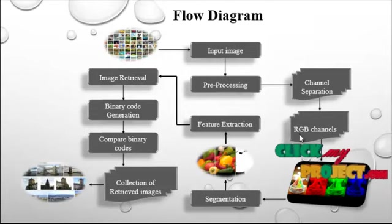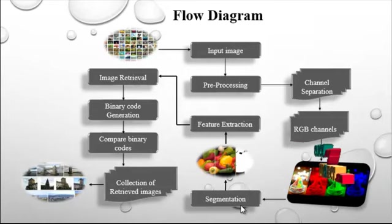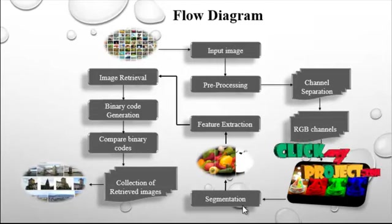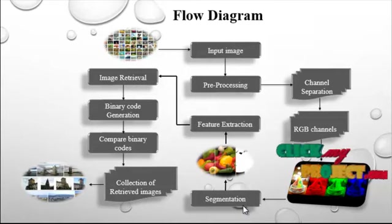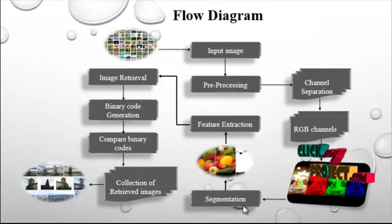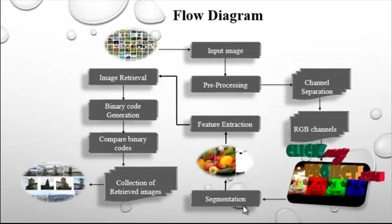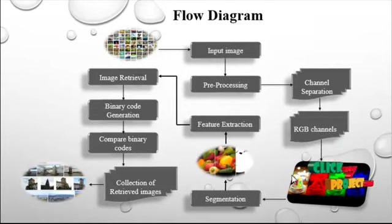After channel separation, segmentation is performed. In segmentation, a single object may be represented by two or more segments, and pixels belonging to different objects may be classified as belonging to the same object. A single segment may contain several objects. The segmentation partitions an image into distinct regions where each pixel has similar attributes, and these regions should strongly relate to the depicted objects or features of interest.